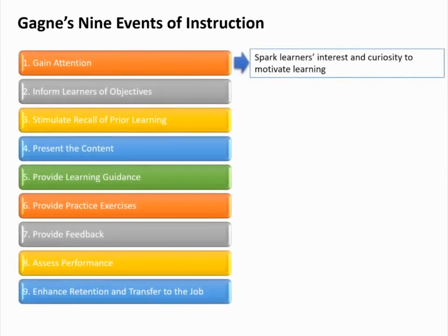Event 1 — Gain Attention: Start the learning experience by gaining the attention of your audience. This change in stimulus alerts the learners that learning will soon take place. You can do this by presenting a story, problem, question, or a new situation that will grab the learner's attention. This can be thought of as an interest device or teaser, such as the short segment often shown in a TV program right before the opening credits that keeps you watching. The ideal is to grab the learner's attention so that they will become involved in the learning process.